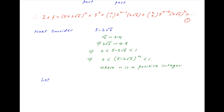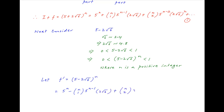Let's denote (5 - 2√6)^n by f'. Using the binomial theorem, this can be expanded as: 5^n - C(n,1)·5^(n-1)·2√6 + C(n,2)·5^(n-2)·(2√6)² - C(n,3)·5^(n-3)·(2√6)³ + and so on. Let's call this Result 2.